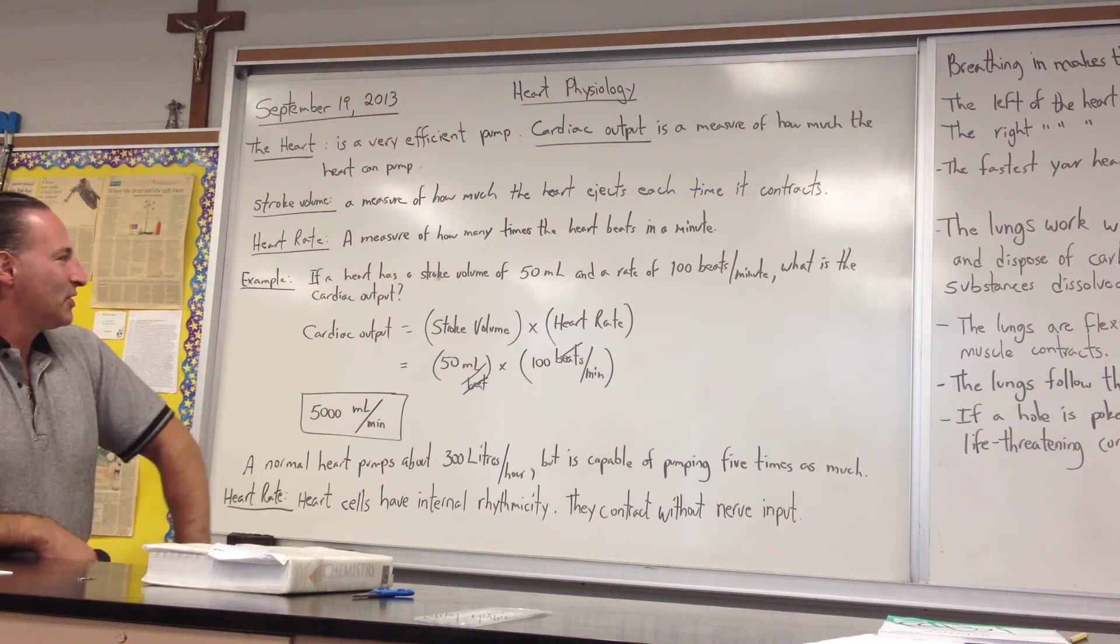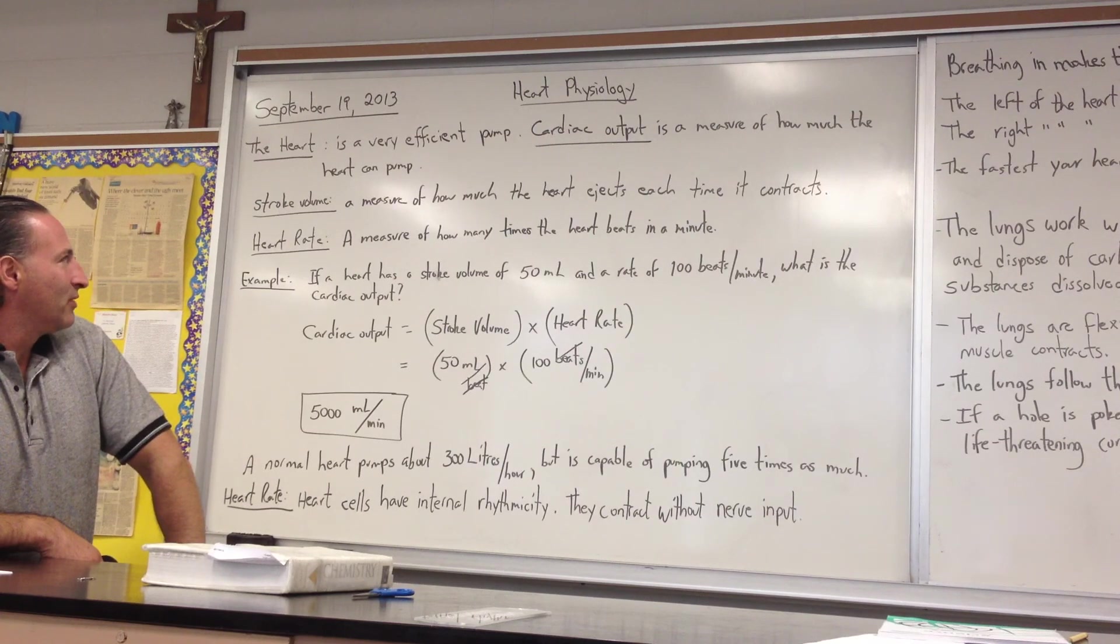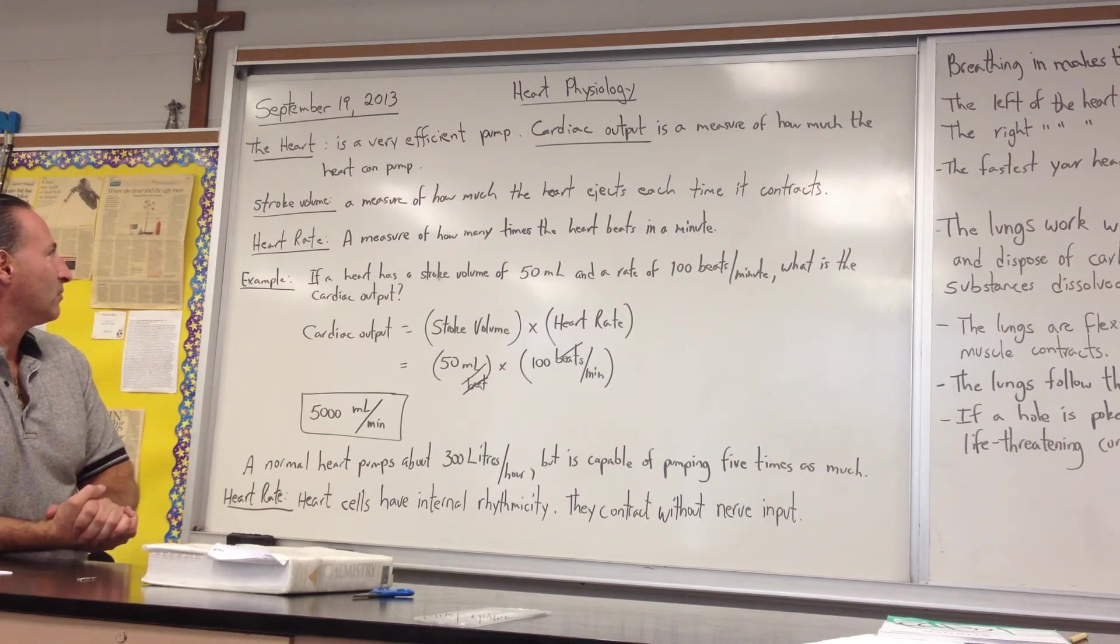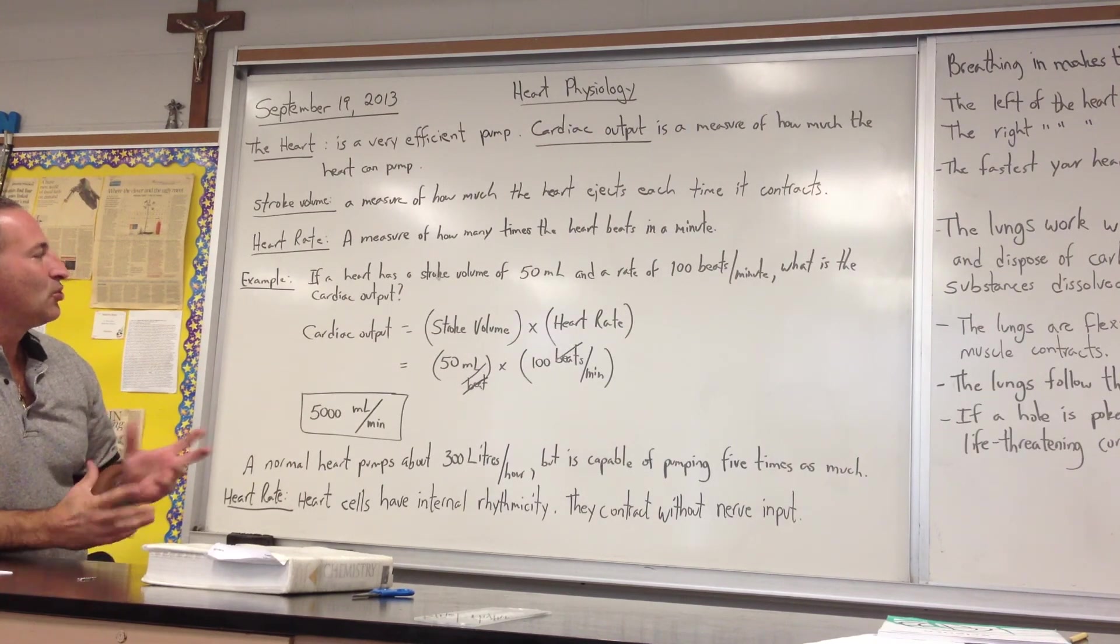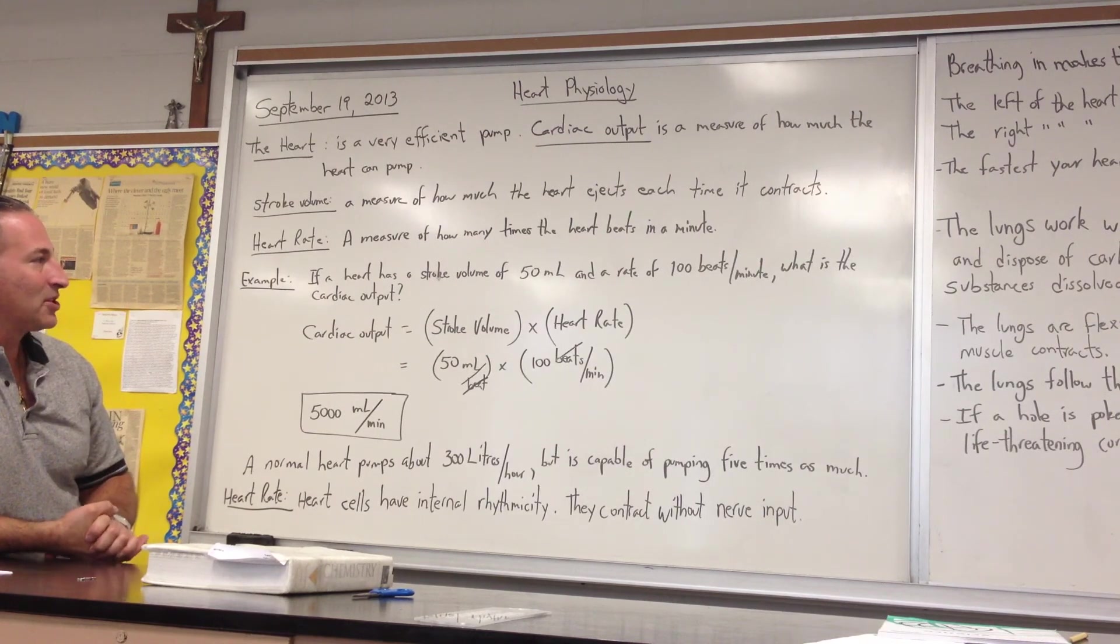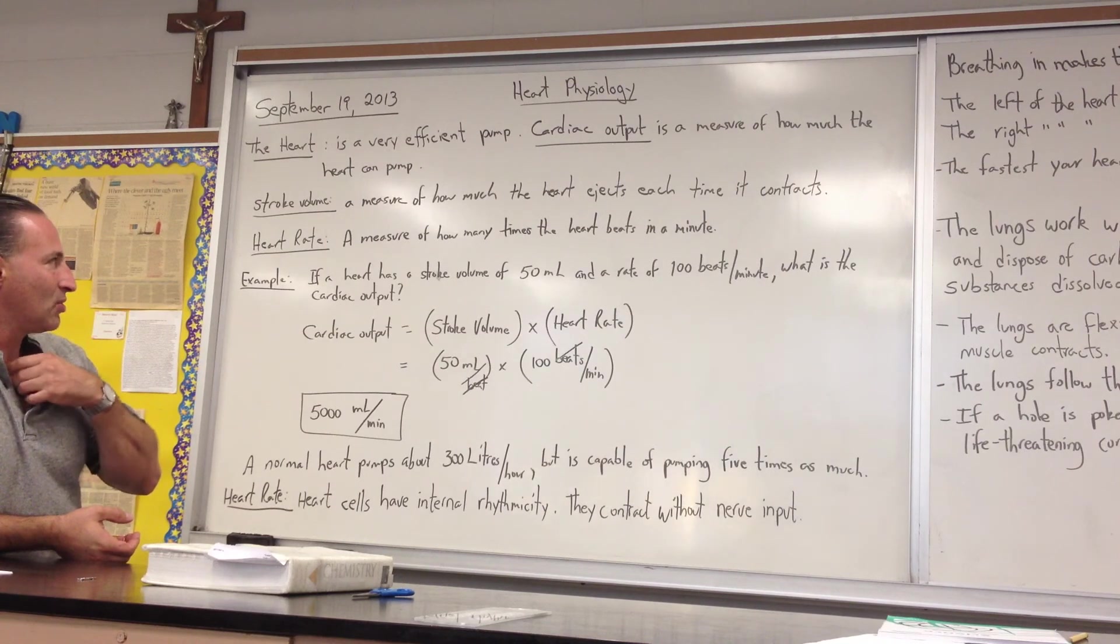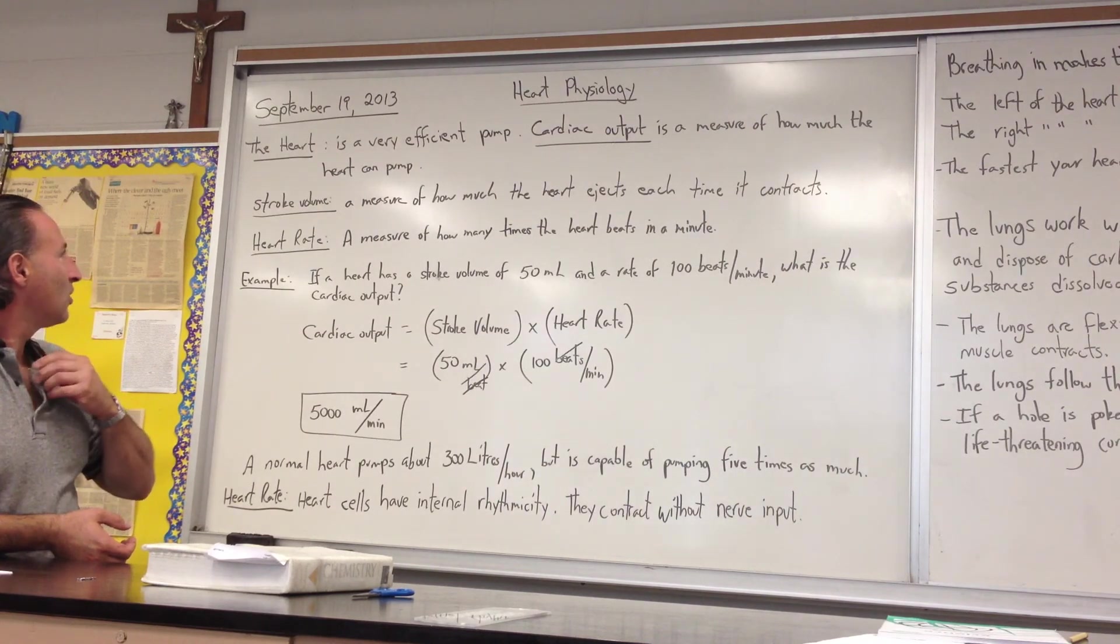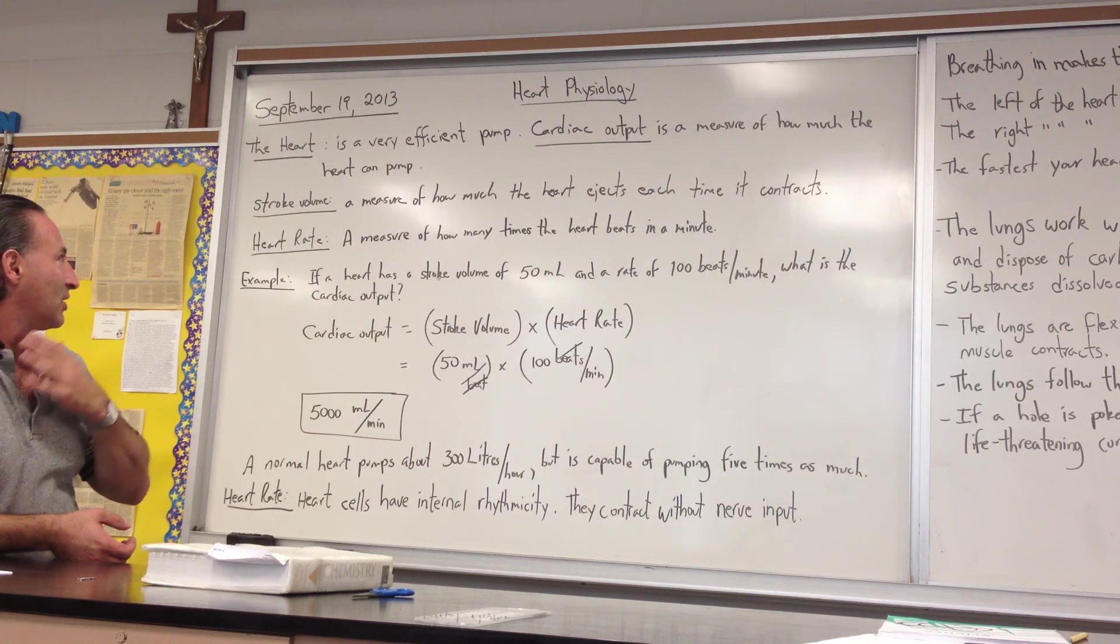Okay, we're talking about heart physiology, and one of the things that we should be aware of is that the heart has a variable stroke volume and rate, and those two things combined equal the cardiac output, how much the heart is able to pump. The cardiac output obviously varies according to how much need there is for the heart to pump blood. So the heart is a very efficient pump, and its cardiac output is a measure of how much the heart can pump.